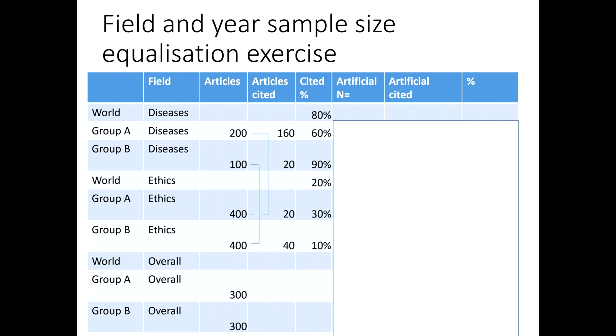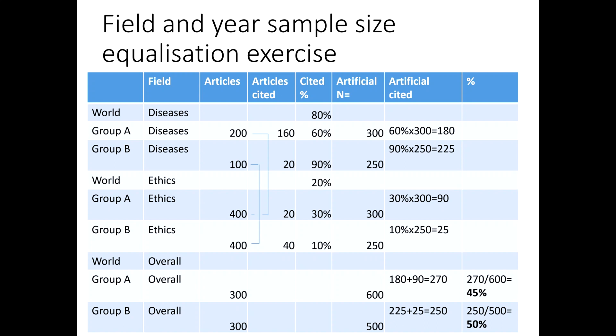If you'd like to practice that, please look at these numbers and see if you can calculate the field-equalized proportion cited for group A and group B. Pause now and I'll restart when you have your answer. The answers are: 45% for group A and 50% for group B. The artificial sample size is calculated separately for each group — for group A with 200 diseases and 400 ethics articles, the average sample size is 300.